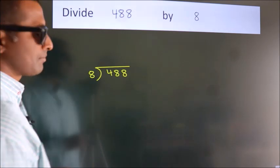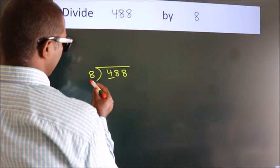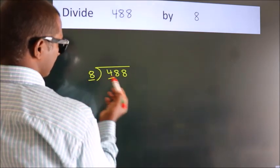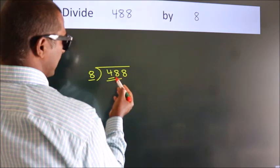Next. Here we have 4, here 8. 4 is smaller than 8, so we should take two numbers: 48.